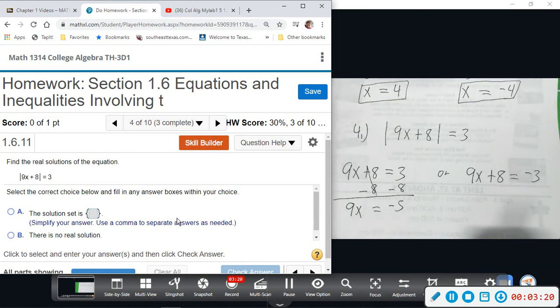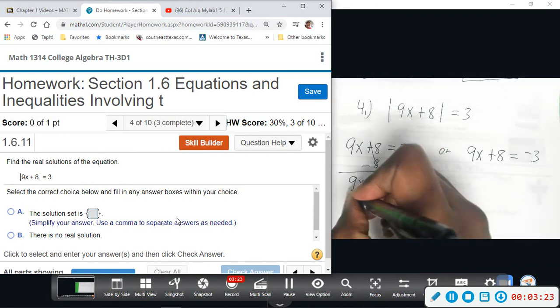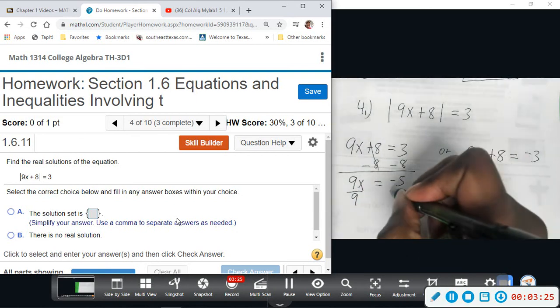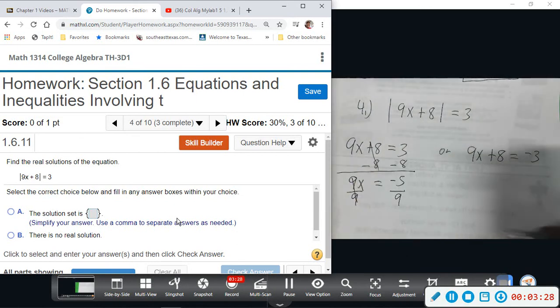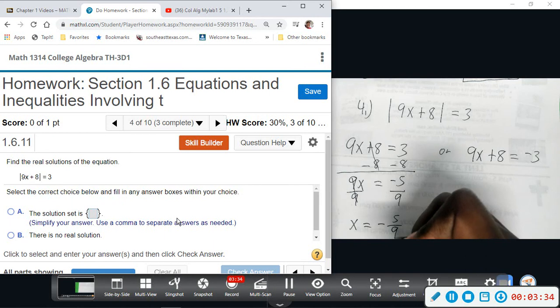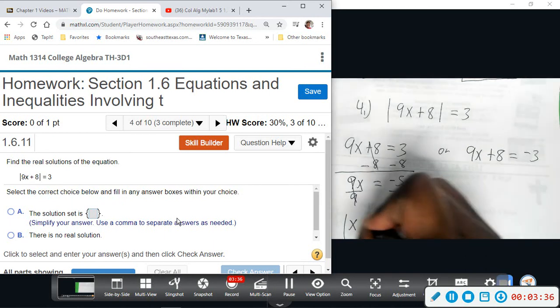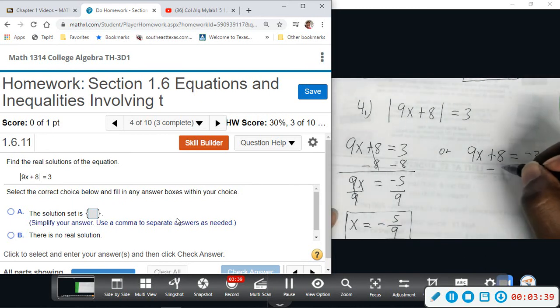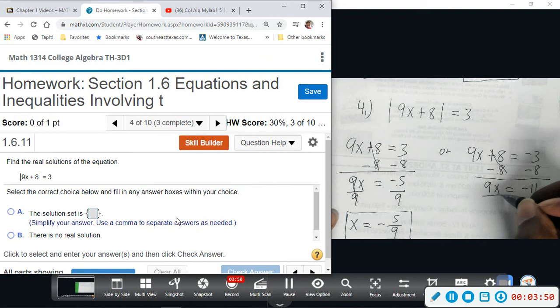This gives us 9x equals negative 5. And then we will divide by 9, and we get x equals to negative 5 over 9. Here we will subtract 8 from both sides.